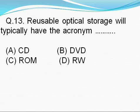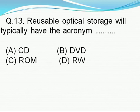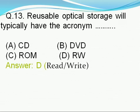Question number 13: Optical storage will typically have the acronym — option A: CD, option B: DVD, option C: ROM, option D: RW. Right answer is D, i.e., RW, which stands for read and write.